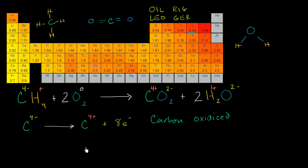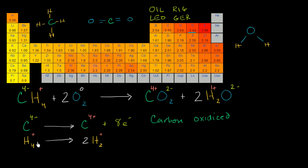Now let's think about the hydrogen. On the left-hand side, you have four hydrogens that each have an oxidation number of plus one. On the right-hand side, you have four hydrogens — we could write it as two H₂s — that each have an oxidation number of plus one. So the oxidation numbers for the hydrogens have not changed. The hydrogens have neither been oxidized nor reduced.